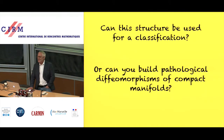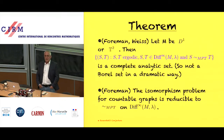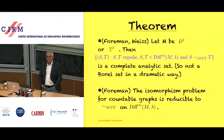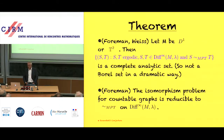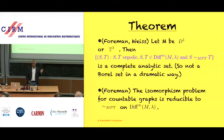I'll give away the theorem first. Let M be either the closed unit disc in R2 or the two-dimensional torus — the simplest possible cases. Then the set of pairs (S,T) such that S and T are ergodic C-infinity diffeomorphisms of M, and S is equivalent to T by measure-preserving transformation, is a complete analytic set. Everyone here knows this means it's not Borel in a very dramatic way.